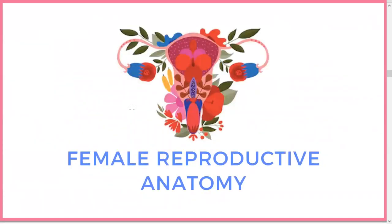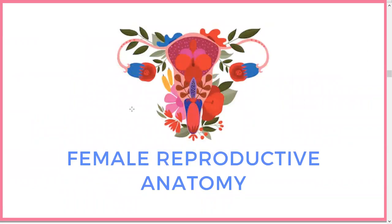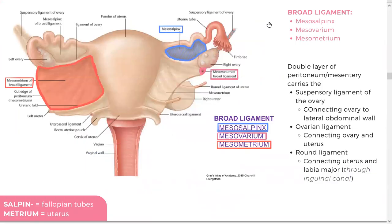Now, female reproductive anatomy. Before we get into the uterus, it's important to know the ligaments. We've got the mesometrium, which connects these structures, and the mesosalpinx — remember that 'salpin' refers to fallopian tubes and 'metrium' refers to the uterus. So mesosalpinx is the mesentery of the fallopian tubes, and mesometrium is for the uterus.